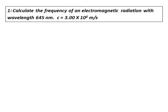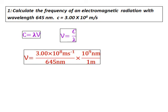Let's do the first question: calculate the frequency of an electromagnetic radiation with a wavelength of 645 nanometers; the velocity of light is also given. If you go back to our formula sheet, the frequency and wavelength are related by the equation C equals lambda nu. Nu is the frequency, C is the velocity of light, and lambda is the wavelength. We need to calculate nu, so rearrange the equation. Substitute the values — the velocity of light is always given in meters per second and the wavelength is always given in nanometers.